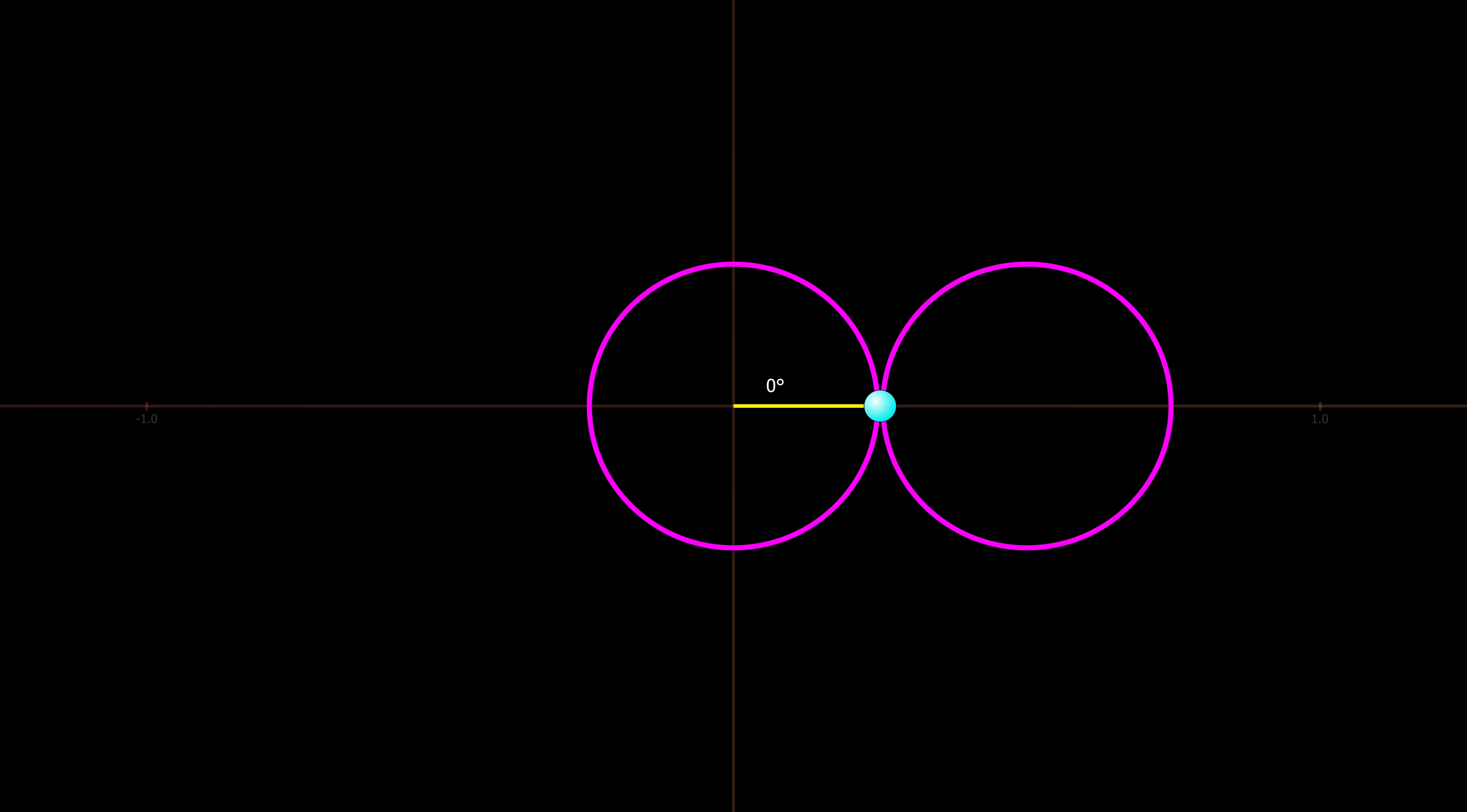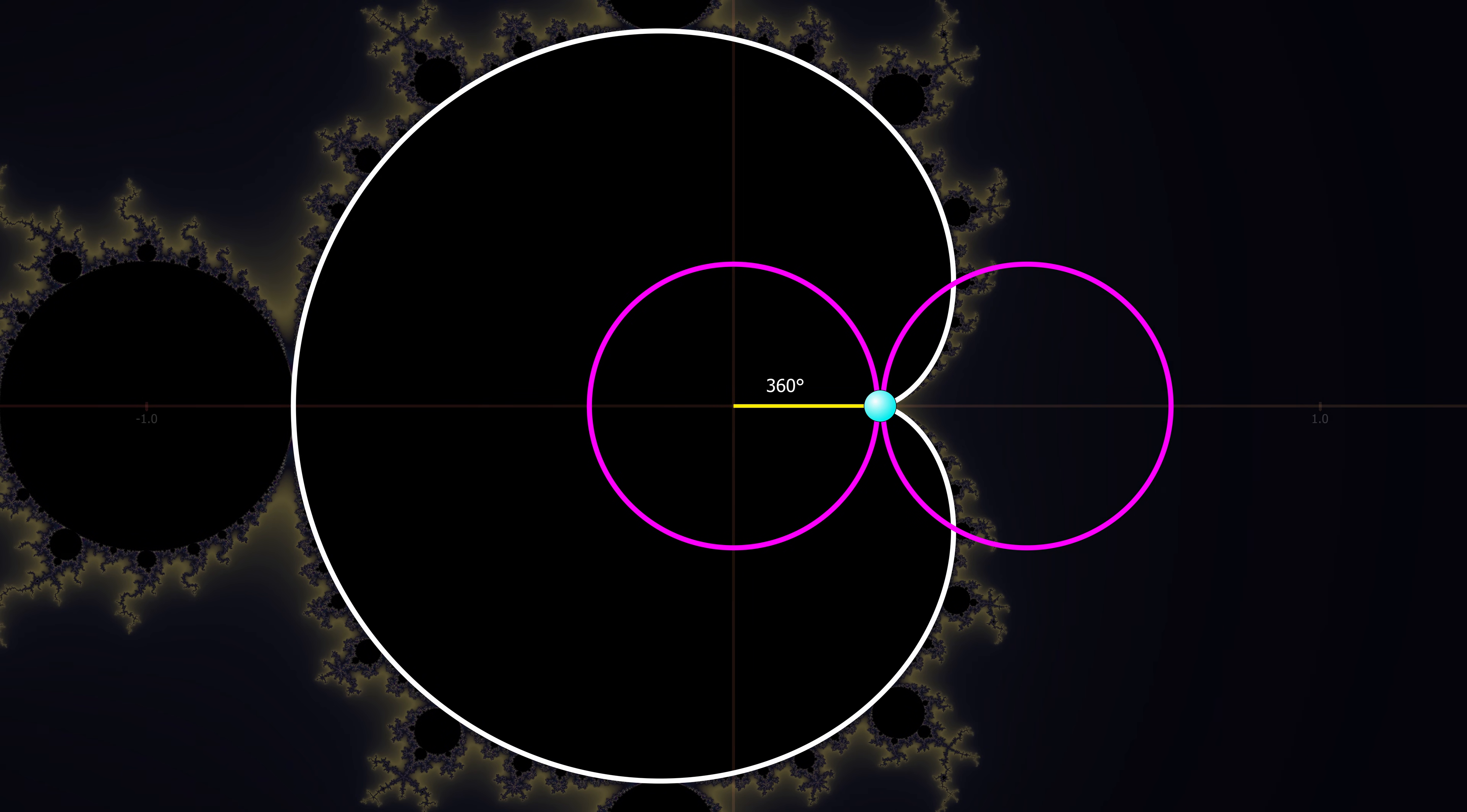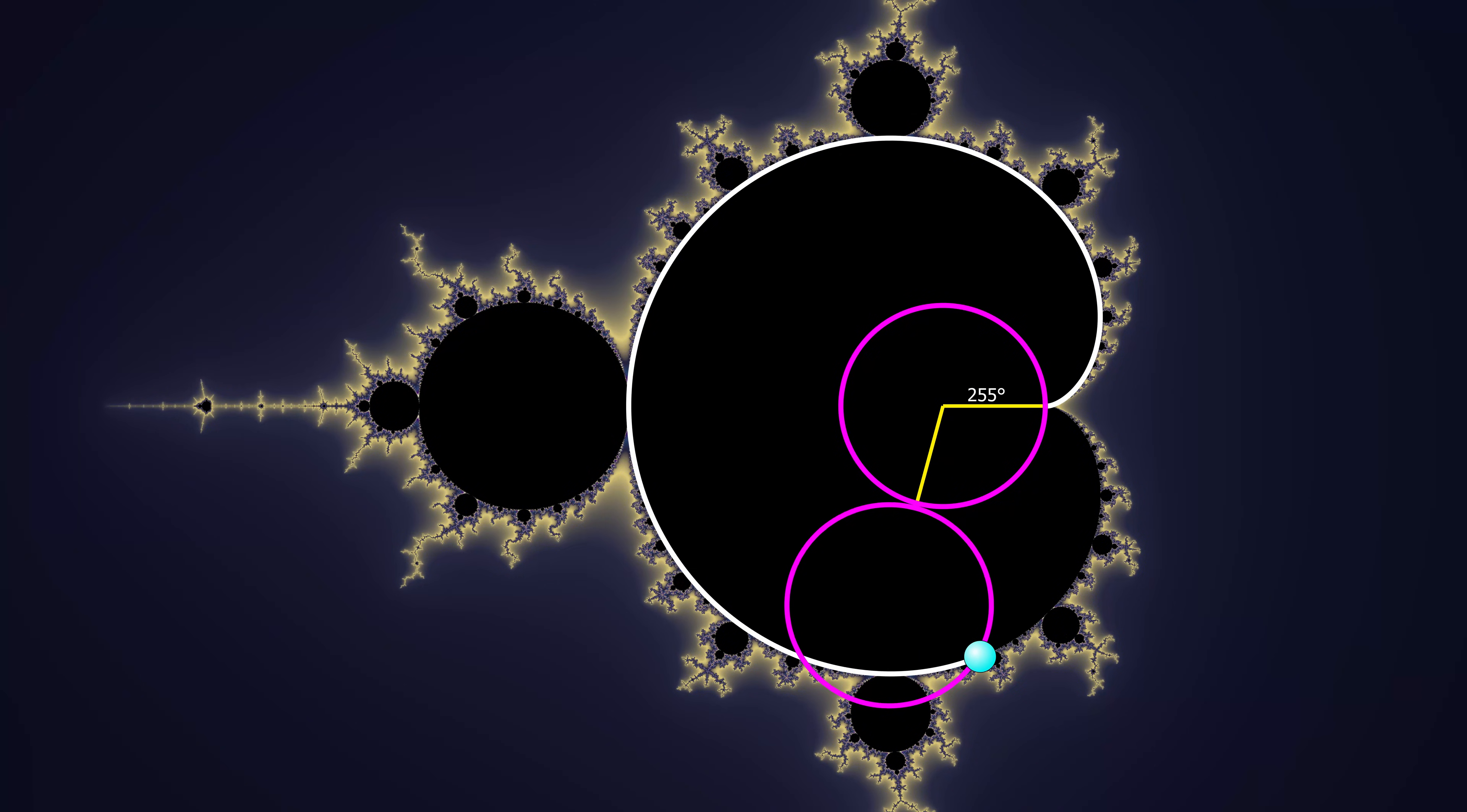We can create a cardioid by rolling one circle around another. It turns out that each bulb is attached to the cardioid at an angle corresponding to the internal circle. For example, the 1 third bulb is located where the outer circle is exactly 1 third of the way around the inner circle.